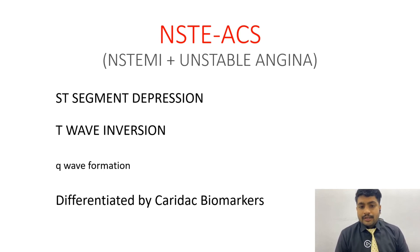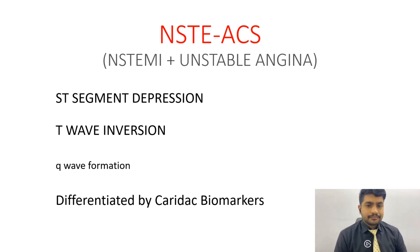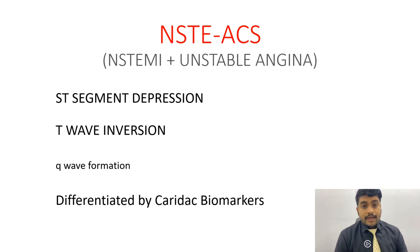Acute coronary syndrome comprises two components: NSTEMI and unstable angina. On ECG, these two can present similarly with ST segment depression or T wave inversions, but we can differentiate them on the basis of cardiac biomarkers. In the case of unstable angina, there may be ECG changes, but we won't have elevated cardiac biomarkers.